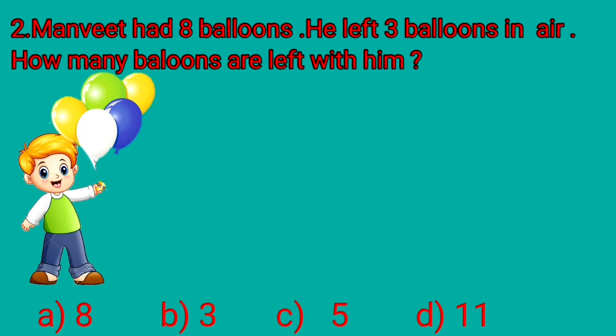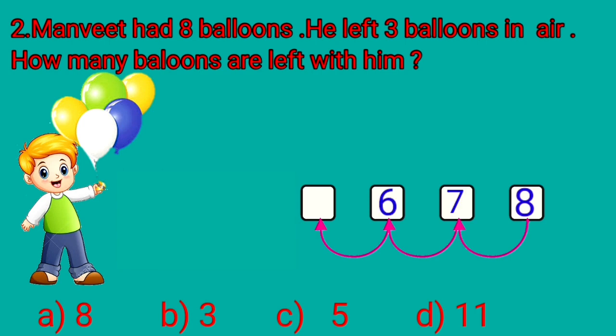We will count 3 numbers backward from 8. Here we write 8 and 3 blanks backward. Now count backward 7, 6, 5. So Manveet is left with 5 balloons. 8 minus 3 is equal to 5. And we will put a tick mark at option C. 5 balloons.